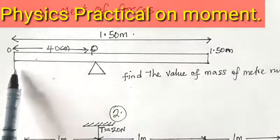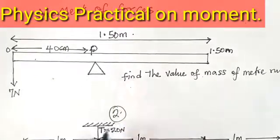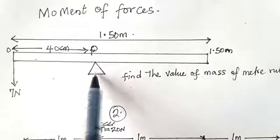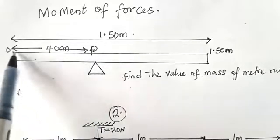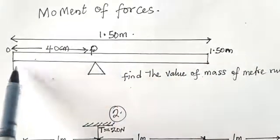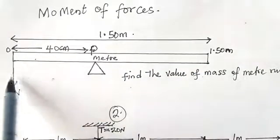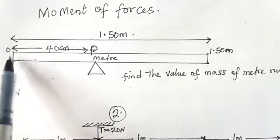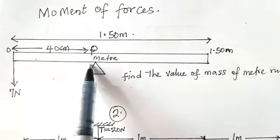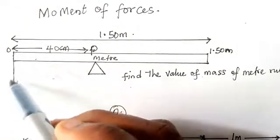You may have this kind of question where they give you what is called a knife edge. This is the knife edge, and this is the point where the knife edge is suspended — sometimes this knife edge gives you a balance point. From the beginning to the end is 1.50 meters, and a particular weight of 7 Newton was suspended at the zero mark.